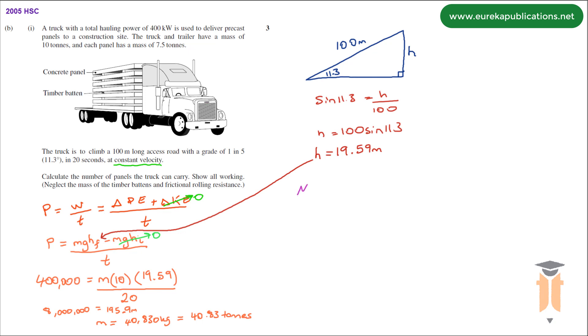Mass of panels is simply 40.83 minus the mass of the truck and trailer which is 10. That gives us a total mass of 30.83 tons of these panels.